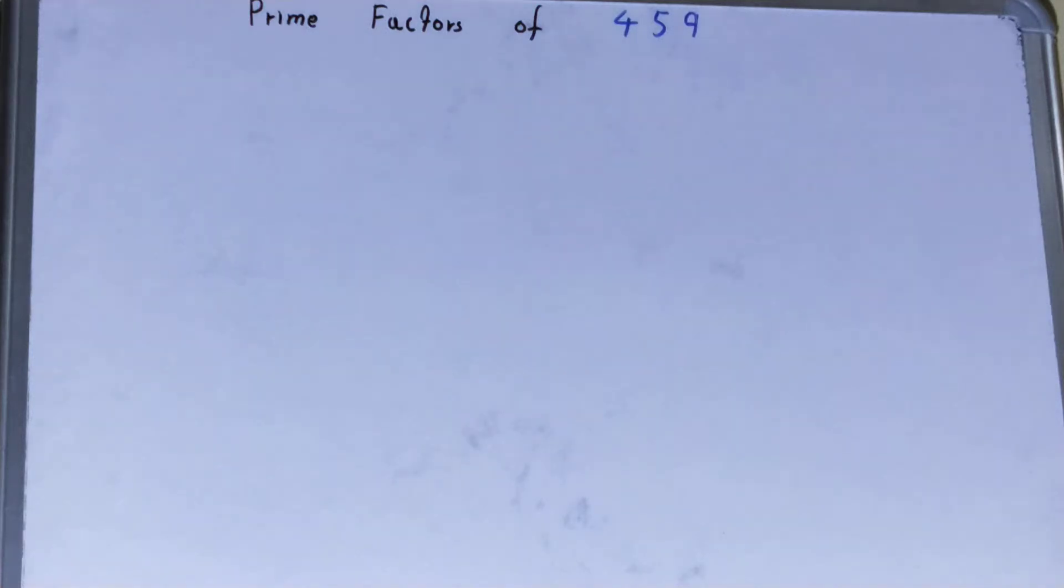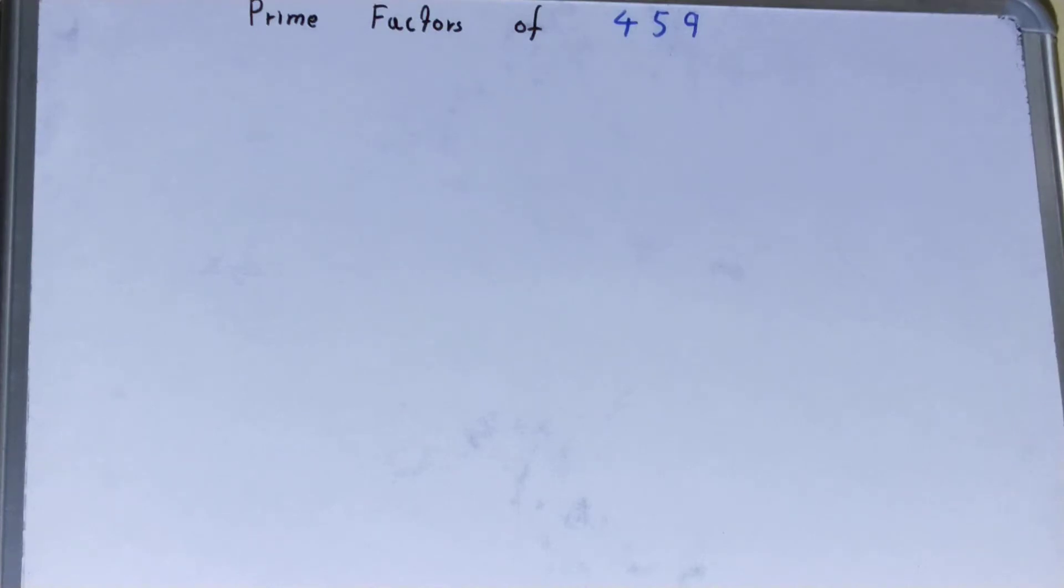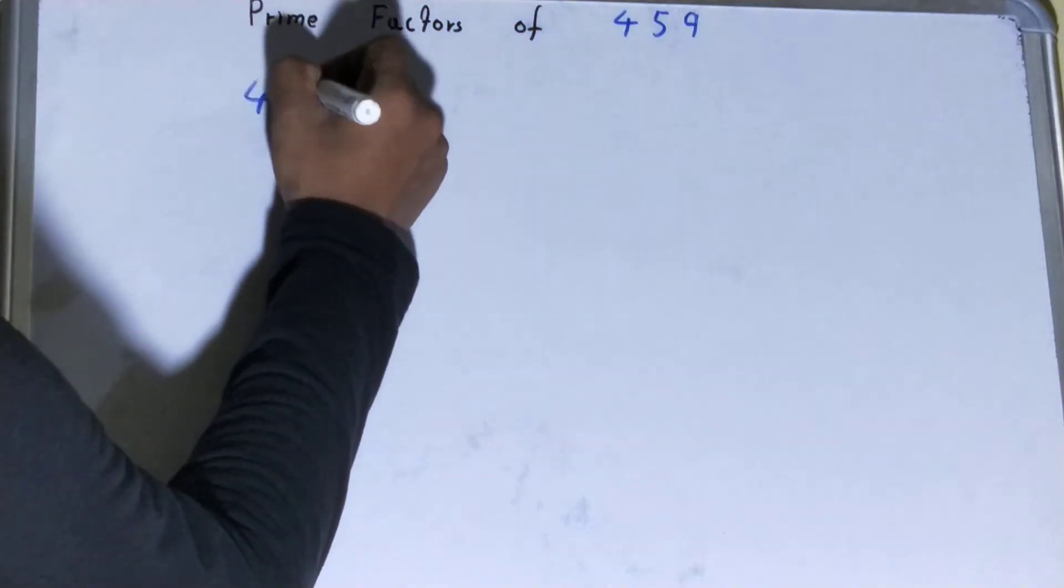Hello friends, and in this video I'll be helping you with the prime factors of the number 459. So let's start. To find out prime factors of 459, you need to write the number like this.